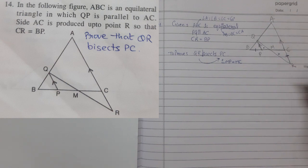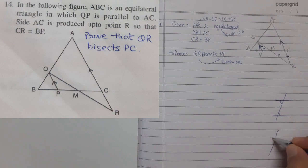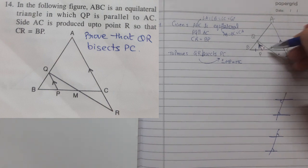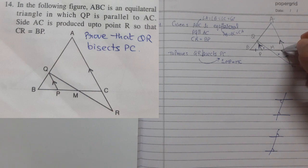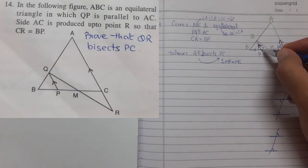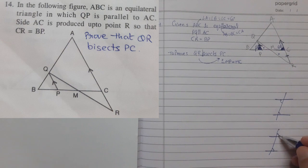Since this line is parallel, we need to go back to our parallel line properties. There are a few properties: alternate interior angles, corresponding angles, and co-interior angles. Out of these three, one will be used here. These two lines are parallel, these two lines are parallel, and this angle is 60 degrees — this angle is interior to the parallel lines.